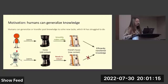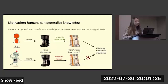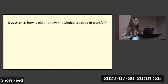By studying human's ability to generalize and transfer knowledge, we hope to use our discoveries to inform the artificial intelligence community to build better and more flexible AI architectures. Now I will use the example above to illustrate the two main questions we are investigating in the current work.